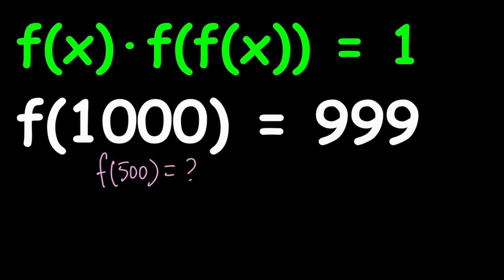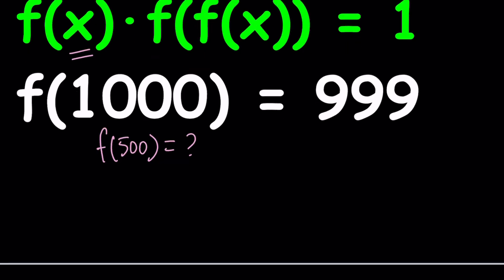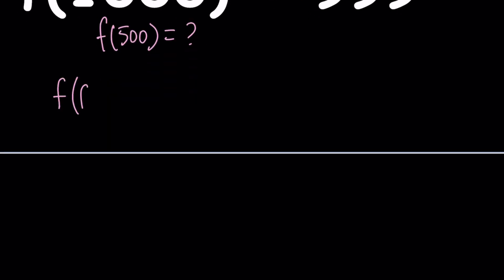Before we get into the actual solution, we're going to explore a couple of different things. First of all, are we able to find what f looks like? What could f be? Is it a rational function, a radical, or exponential? Does this function exist, and if it does, what kind of function are we talking about? So let's try to isolate f(f(x)), which will probably give us a better view. We can write f(f(x)) as 1 over f(x).